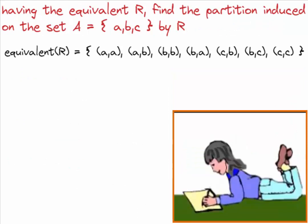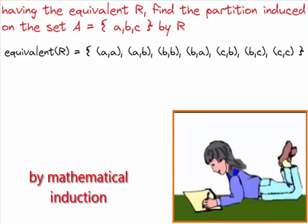Finally, having an equivalent relation, we are going to find the partition by mathematical induction. First, let's take the set elements one by one. A is related only on itself and B. There is no A-C pair.